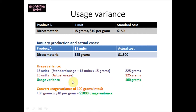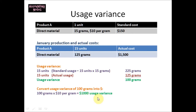We need to convert the grams into dollars. We know that the standard cost is $10 per gram. So take 100 grams and value it at $10 per gram to get a $1000 usage variance.